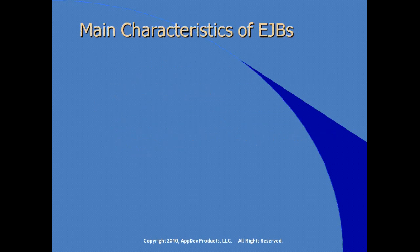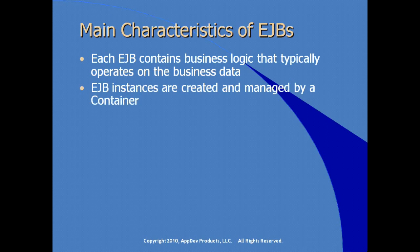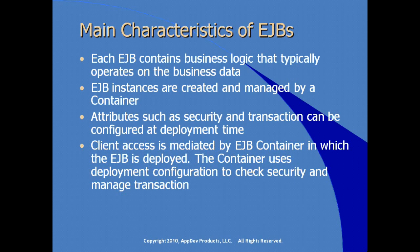What are the main characteristics of EJBs? Each EJB contains logic necessary for the business that typically operates on business data. EJB instances are created and managed by an EJB container. Attributes such as security and transactions can be configured at deployment time, so each customer is free to change the configuration when the application is deployed. Any access to EJB code is mediated by the EJB container, which uses the deployment configuration to check security and manage transactions.